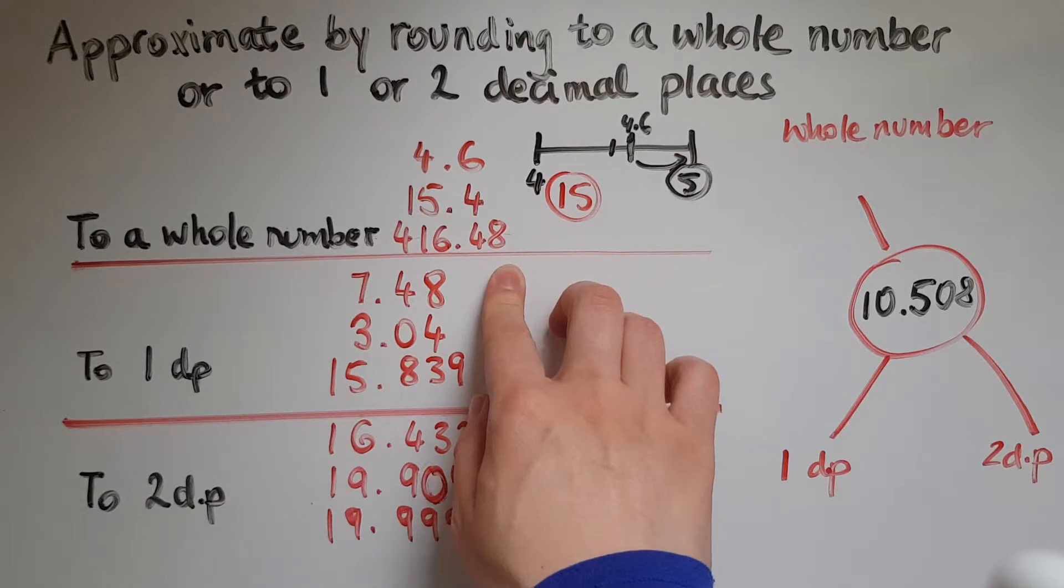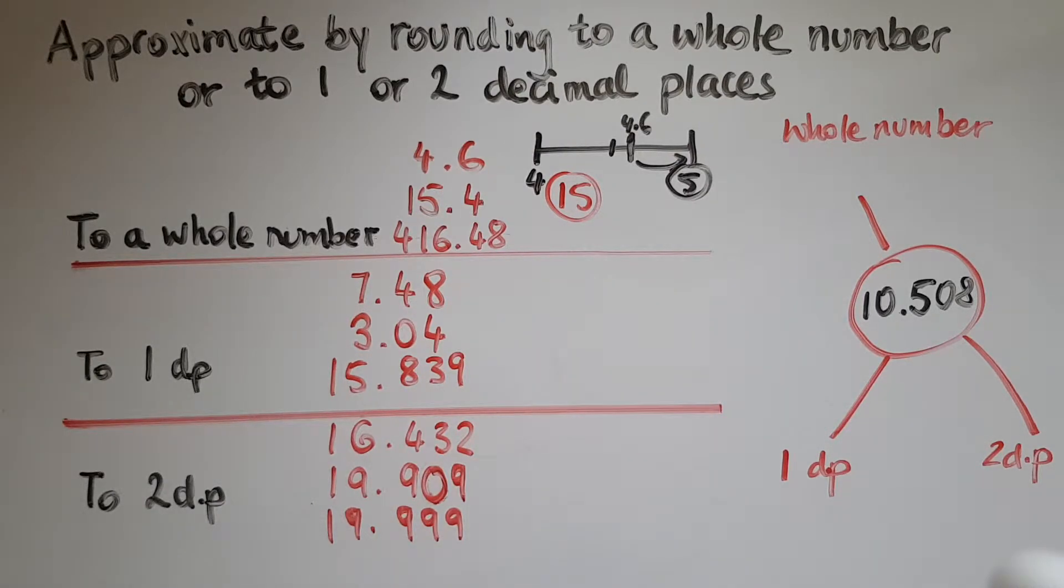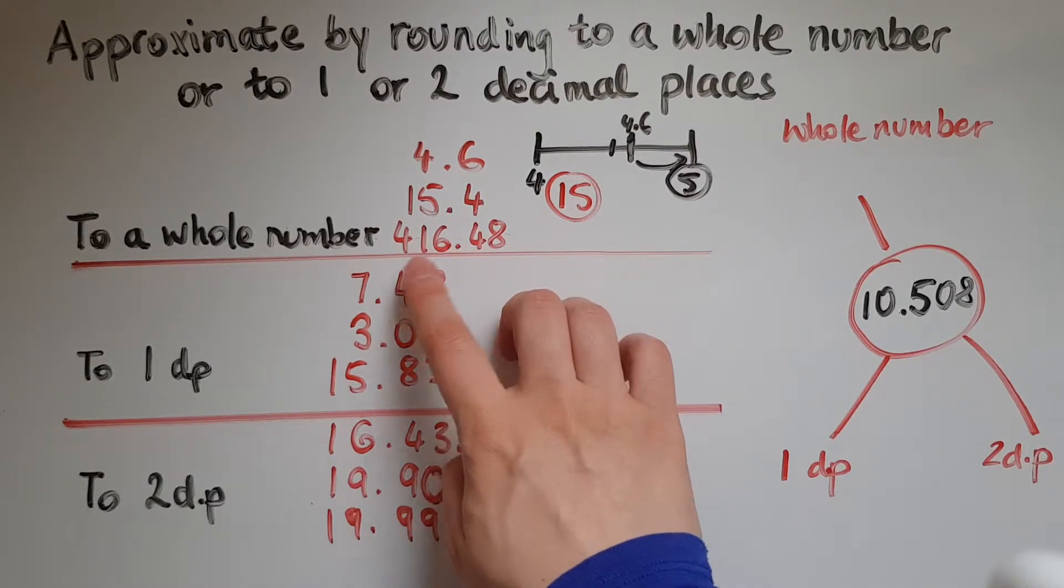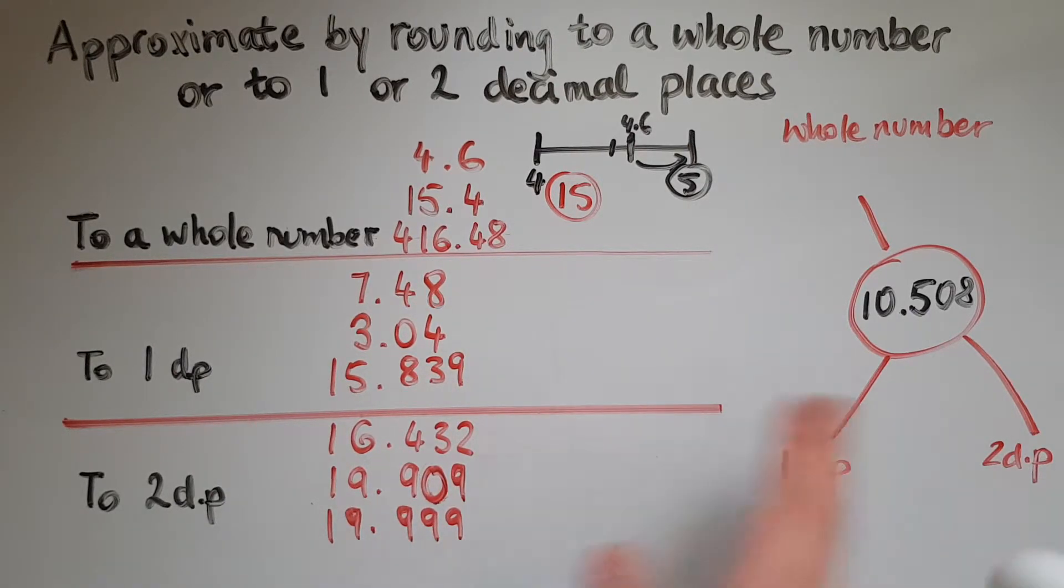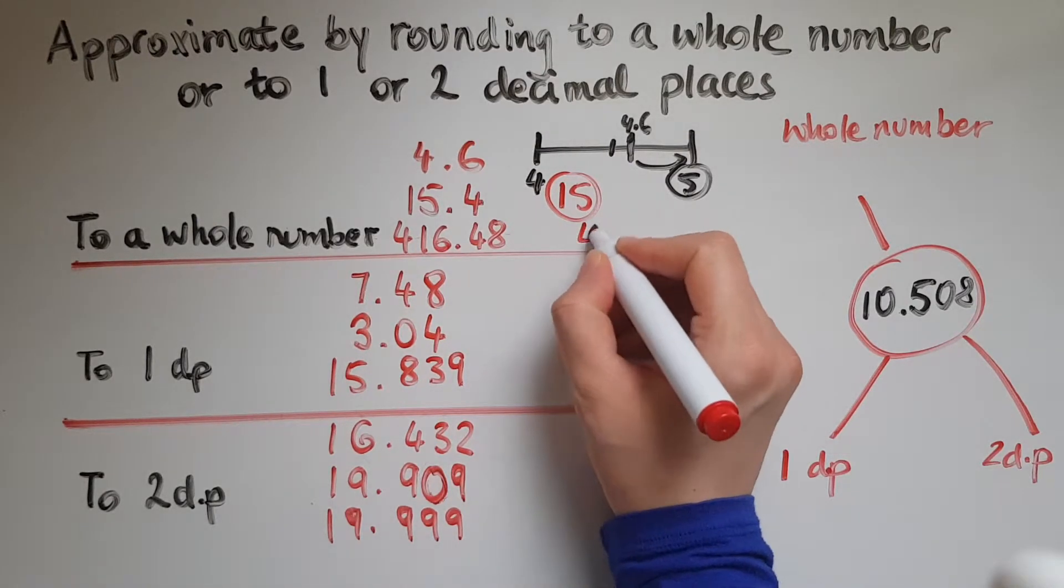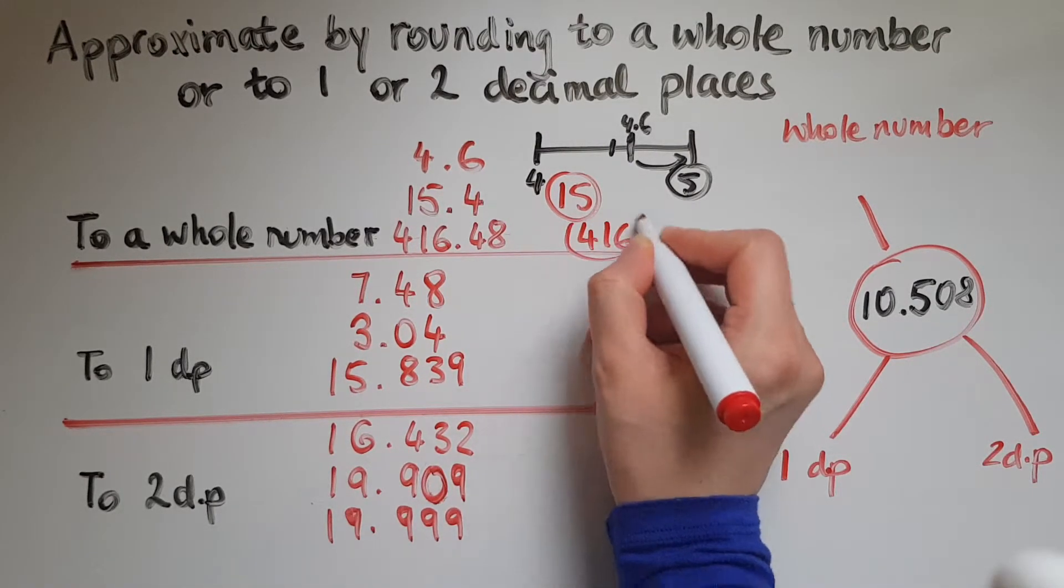416.48. So that is between 416 and 417. Now if this was money, it would be 416 pounds and 48 pence. 48 pence is closer to 416. So it's less than halfway between 416 and 417. If it was 50 pence, then we would go up. So we're going to round down to have this as 416 to the nearest whole number.